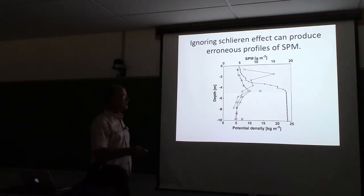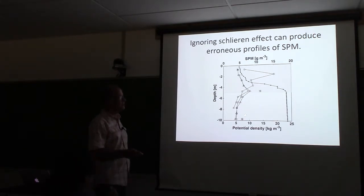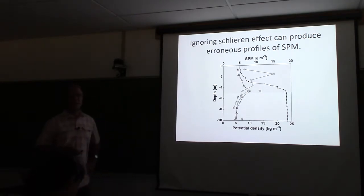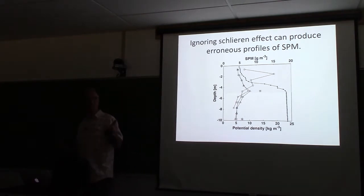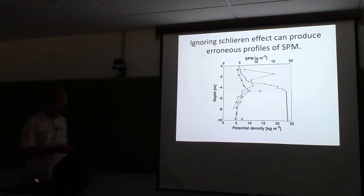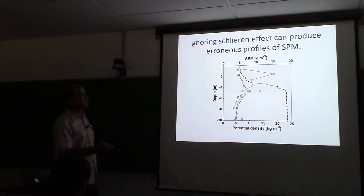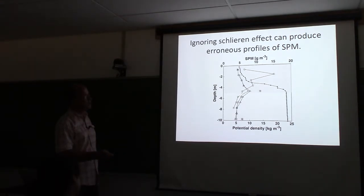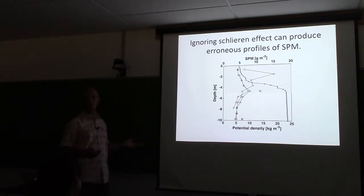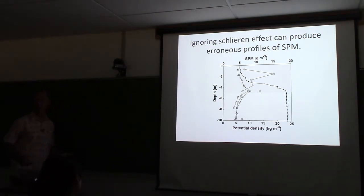That pattern is backed up by the direct measurements of SPM. But if you uncritically looked at your LISST attenuation data and inferred SPM from that, you get an entirely incorrect picture with a significant particle-rich layer showing up at two meters that then falls off rapidly. You might infer, as many people have, that there's some kind of particle trapping in the pycnocline occurring, when there's no such thing going on at all.